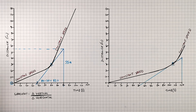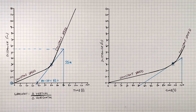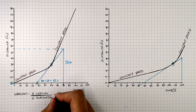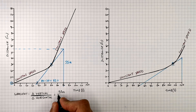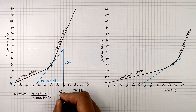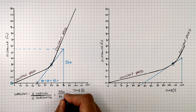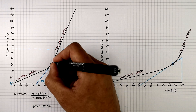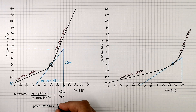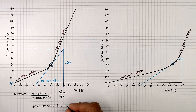So to work out the speed during the acceleration, it's going to be the change in vertical, which is 55 metres, divided by the change in horizontal, which is 43 seconds. That gives you a speed at 60 seconds of 1.27 metres per second.